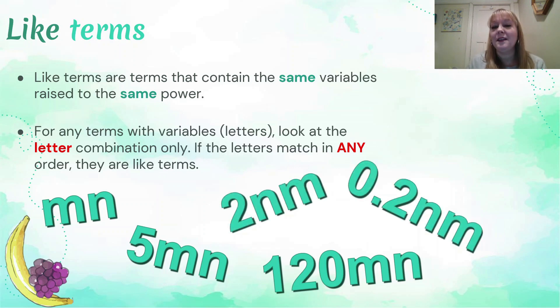I've thrown a couple more in here. You'll see 2nm and 0.2nm. Now these are also like terms with the mn terms. You might be thinking, 'Well hang on, that's a different letter combination. The m and the n are reversed.' This is something important to get your head around too. Firstly, it's an algebraic convention that we put the letters in alphabetical order. So m should come before n when we're writing it. It just makes life a little bit easier.